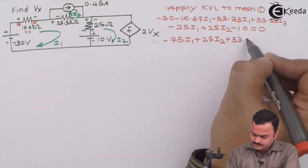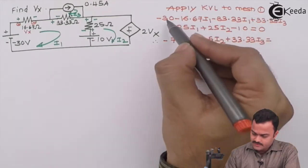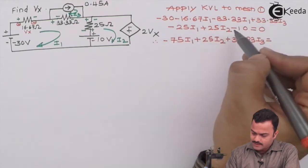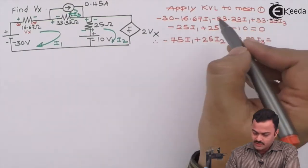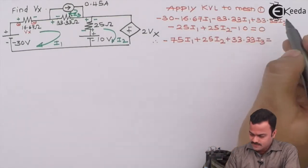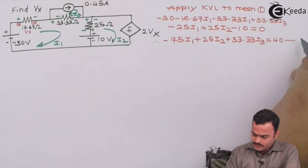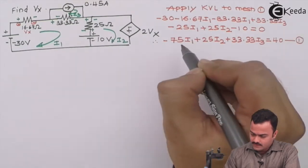And i3, once again only one term, that is 33.33i3 equal to, the constant over here is minus 30 and minus 10 that becomes minus 40. On the left hand side, if I take this minus 40 on the other side it becomes plus 40. So we will get a straightforward equation 1.